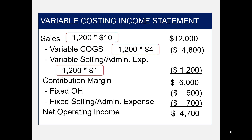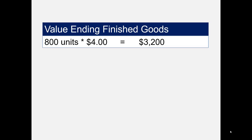That's the income statement. Now we'll value the ending finished goods inventory for the balance sheet. We still have 800 units, but now they'll be valued at $4 instead of $4.30 under the variable costing method. That totals $3,200 assigned to the 800 units.